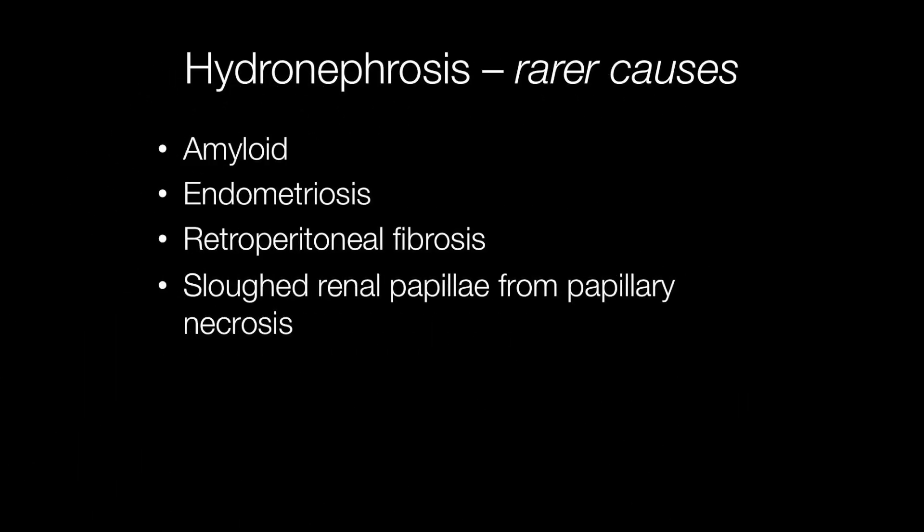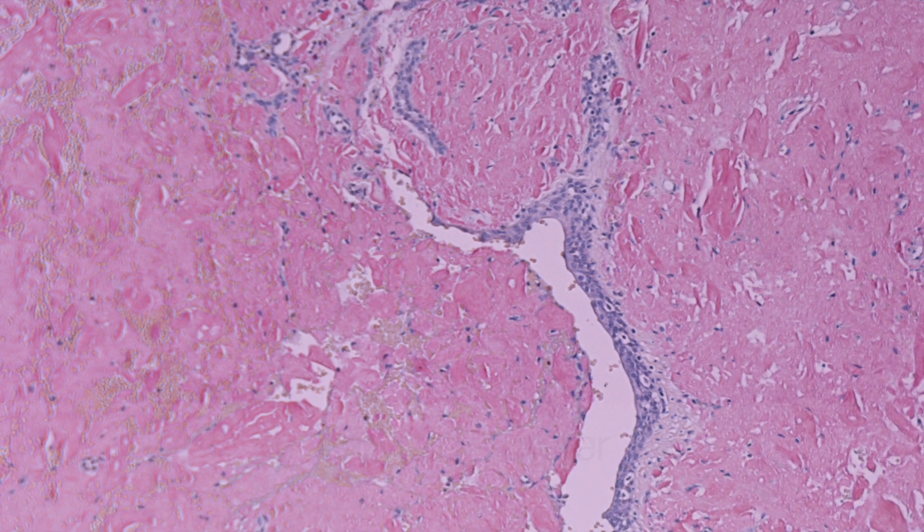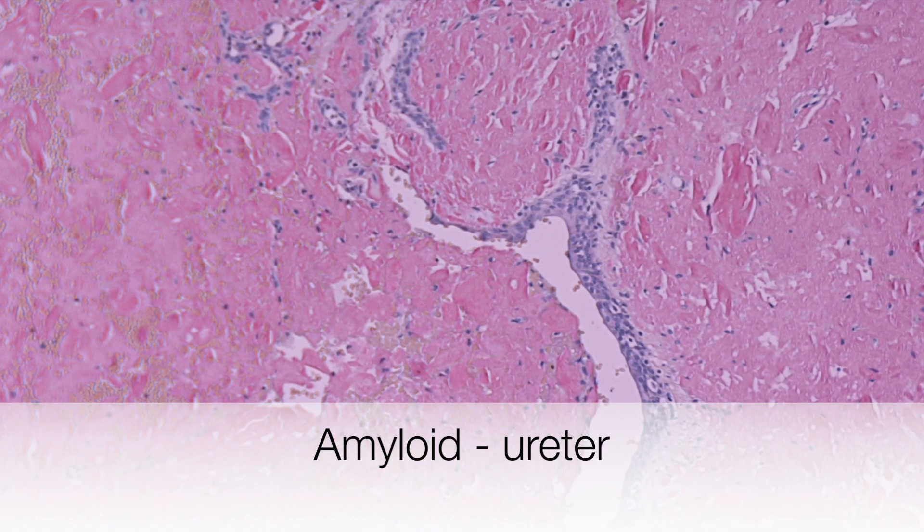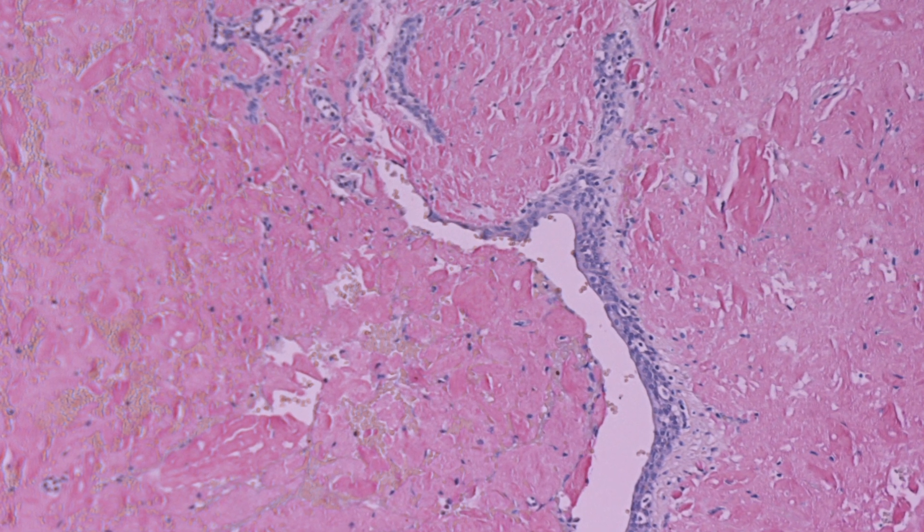Some more unusual causes of hydronephrosis include endometriosis. Amyloid can be deposited in a ureter resulting in obstruction. Retroperitoneal fibrosis, where there is scarring in the tissues around the kidneys and ureters, can also result in hydronephrosis. Sometimes the renal papillae may slough or fall off in cases of renal papillary necrosis and cause a blockage. This image shows a deposit of amyloid — a red staining material in the ureter.